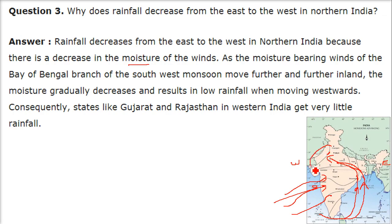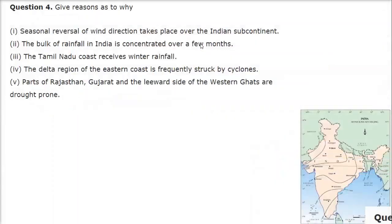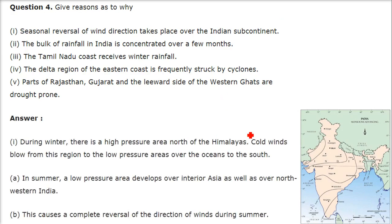Give reason why seasonal reversal of wind direction takes place over the Indian subcontinent. During winter there is a high-pressure area north of the Himalayas, so cold winds blow from this region to the low-pressure area over the oceans to the south. In summer, a low-pressure area develops over interior Asia as well as over northwestern India, which causes a complete reversal of the direction of winds during summer. That is how the reversal of wind takes place.